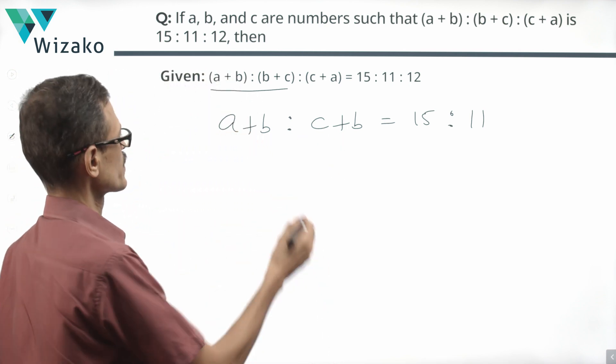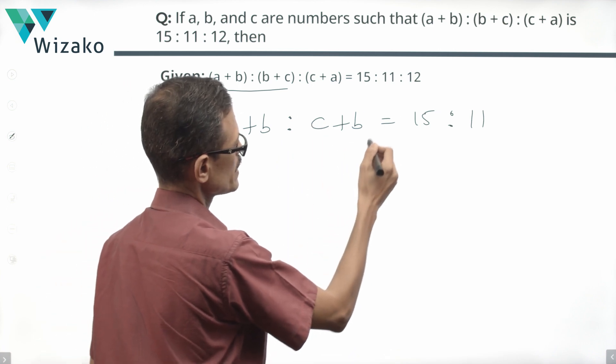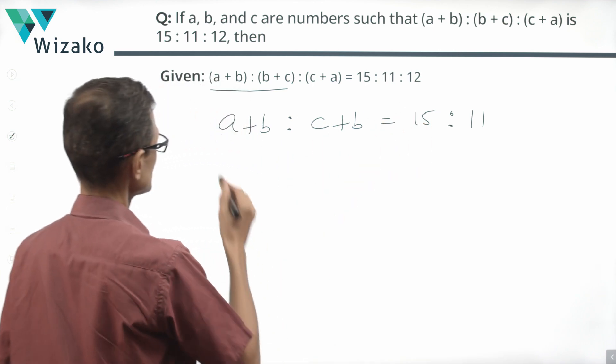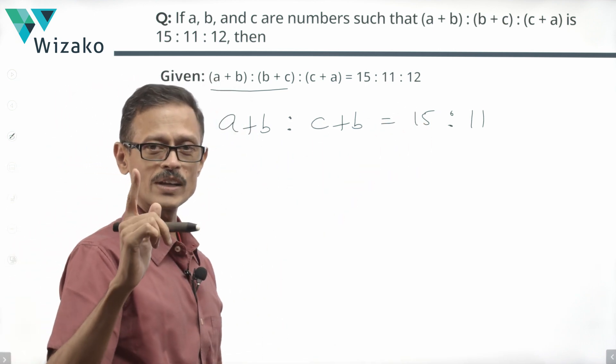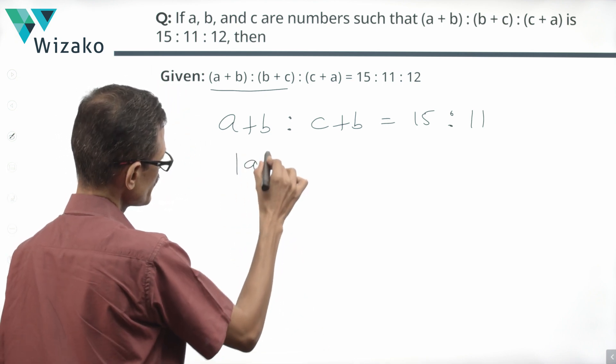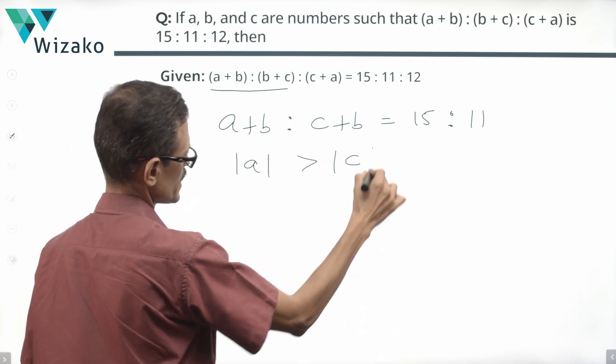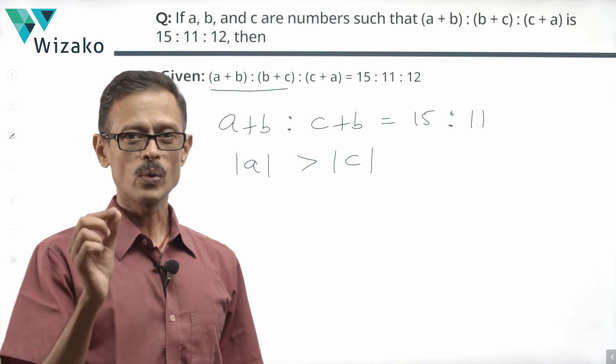So what we can deduce is, if (a+b):(c+b) equals 15:11, then it's not that a is greater than c. That's where you need to watch out. But |a| is greater than |c| is what you can determine. Why? Let me explain.